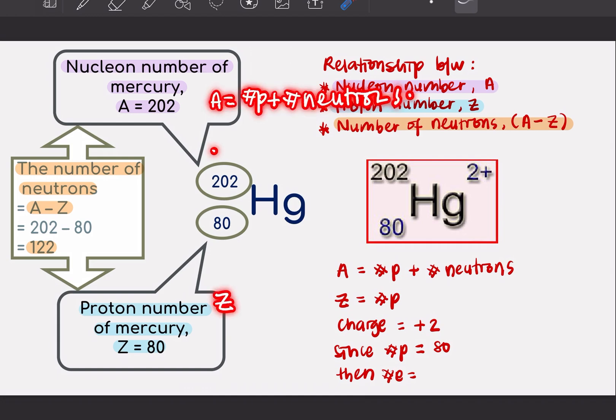And you are given the number of Z, number of proton. That means you can find the number of neutrons.